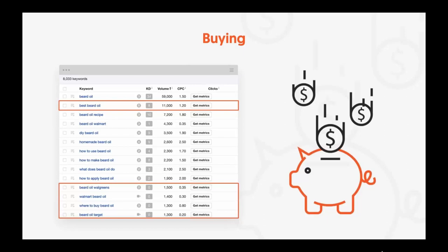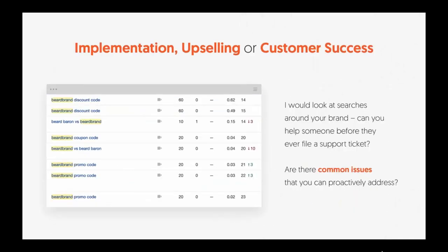After buying comes implementation, upselling, or customer success. Look at whether people are typing in things like 'beard brand discount code,' 'beard brand coupon code,' or promo codes. Using Google Correlate, people first type in 'beard oil,' and then a few weeks later — after they've already tried it — they type in 'beard balm.' That's when upsell opportunities emerge. Your best converting customer is someone who has already bought from you.